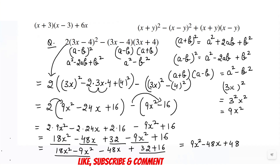This is how you can simplify algebraic expressions using the algebraic identities: a plus b whole square, a minus b whole square, or a plus b into a minus b. If you find this video helpful, please leave a comment. Thanks for watching.